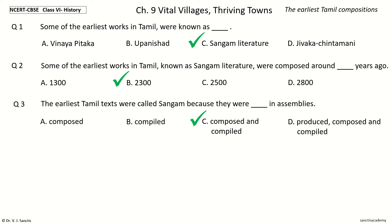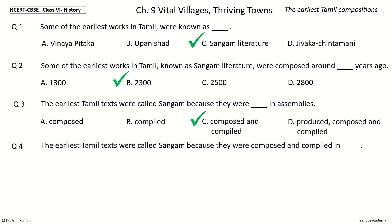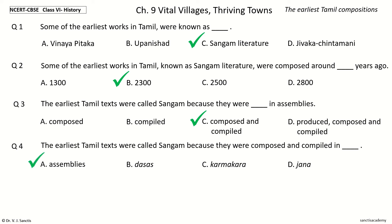Question 4. The earliest Tamil texts were called Sangam because they were composed and compiled in blank. The options are: Assemblies, Dasas, Karma Kara, Jana. The answer is Assemblies. The earliest Tamil texts were called Sangam because they were composed and compiled in assemblies.